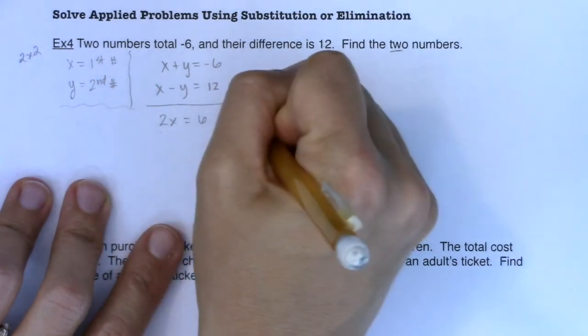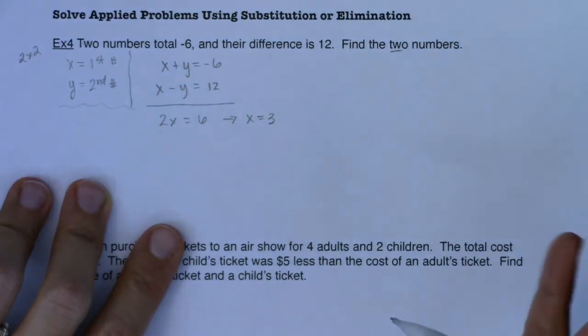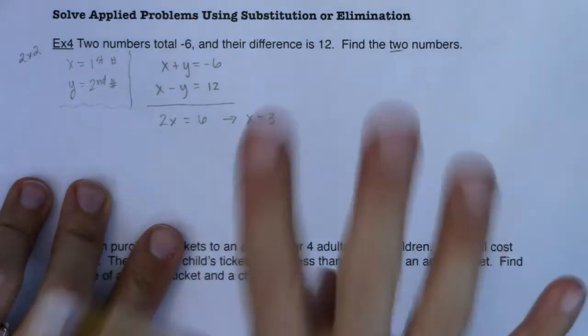When I divide both sides by two, I get X equals three. Fantastic, but that's only half the problem. I need an ordered pair.